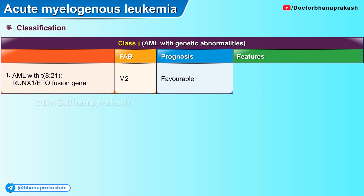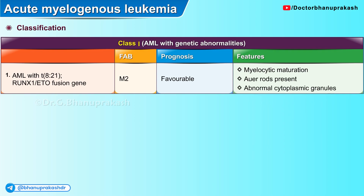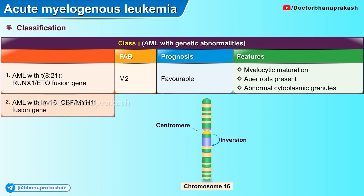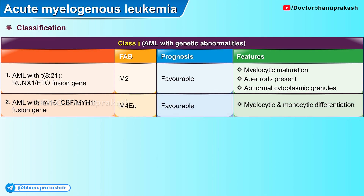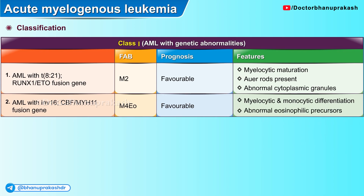The features associated with this variant include myelocytic maturation, the presence of Auer rods, and abnormal cytoplasmic granules. The second variant is AML with inversion 16, resulting in a CBF-beta/MYH11 fusion gene. It is represented as M4Eo by the FAB system with a favorable prognosis, showing myelocytic and monocytic differentiation and abnormal eosinophilic precursors.